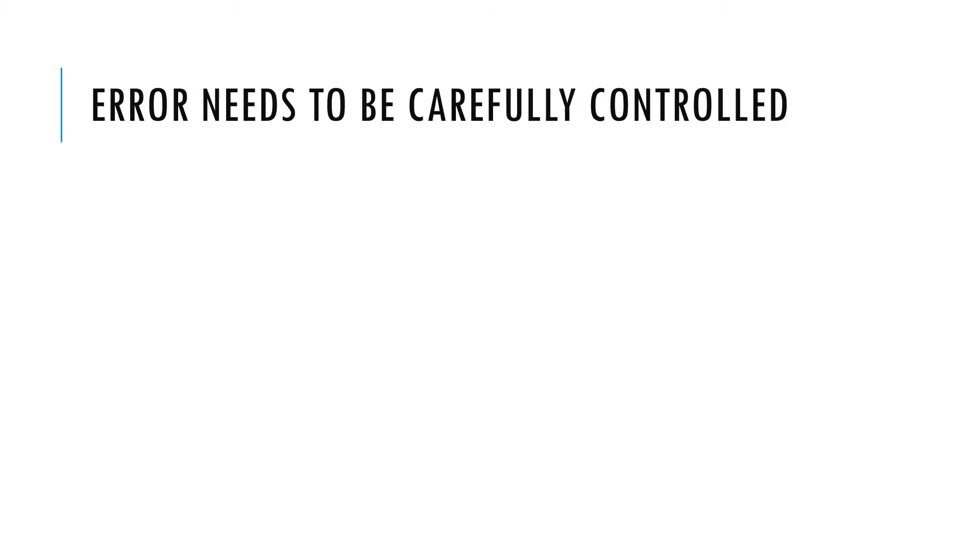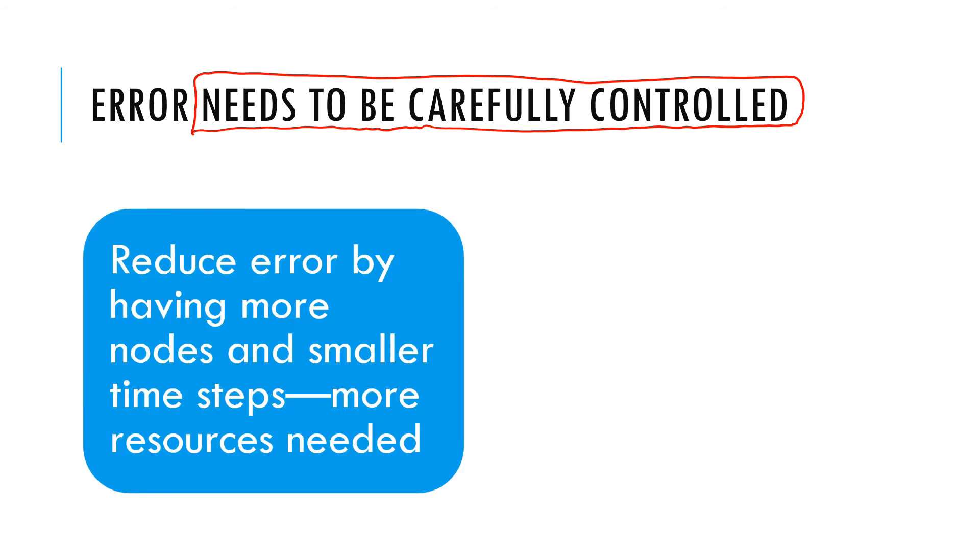So how is it that this method, this particular method, finite element method, is so popular for solving engineering problems, even though it has those restrictions. We can see one way, that is, even though the error in this needs to be carefully controlled, as the point we just made, it can be controlled. It can be controlled by having more nodes, for example. That will reduce the special, the error in spatial discretization.